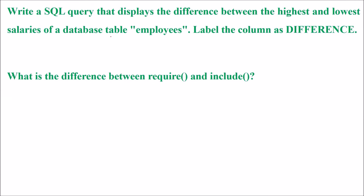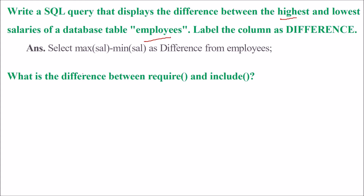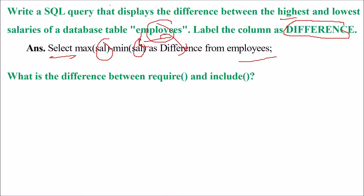Write a SQL query that displays the difference between the highest and the lowest salaries from the database table employees, and label the column as difference. You need to use: SELECT MAX(sal) - MIN(sal) AS difference FROM employees. Because you are labeling it, the name of the column would be difference, and the database table is employees.